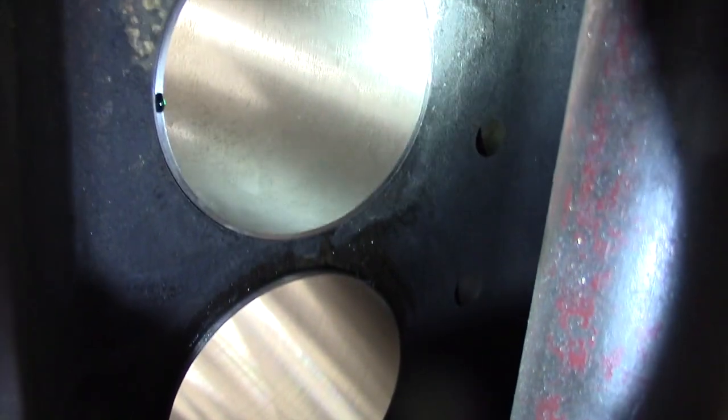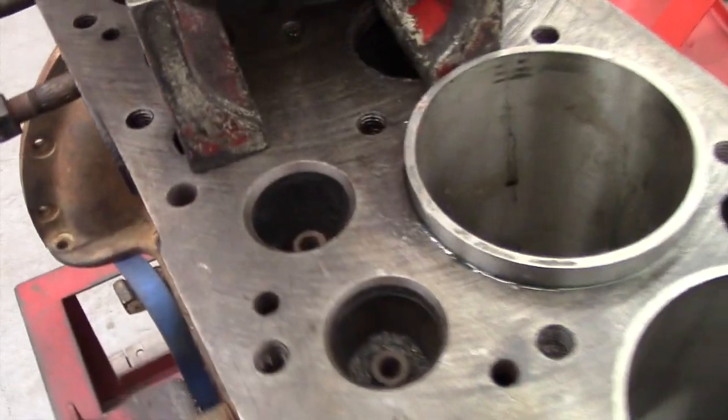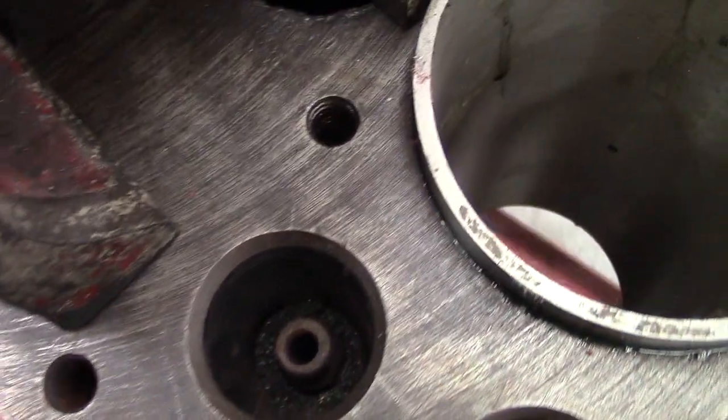Here you can see the sleeve protruding from the bottom of the block as well as the top. This will be machined flush later.